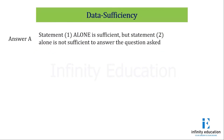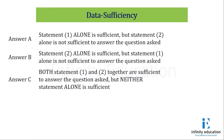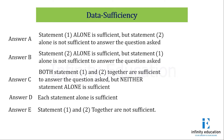In data sufficiency, the answers are always the same. A should be the answer when statement 1 alone is sufficient but statement 2 alone is not sufficient. B should be the answer when statement 2 alone is sufficient but statement 1 alone is not sufficient. C should be the answer when both statements 1 and 2 together are sufficient but neither statement alone is sufficient. D should be the answer when each statement alone is sufficient. And E should be the answer when together 1 and 2 are also not sufficient.